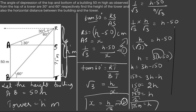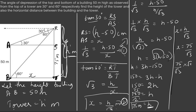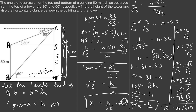We still need to find the horizontal distance x between the building and the tower. Substituting h = 75 into equation 2: x = 75/√3. Rationalizing by multiplying numerator and denominator by √3: x = 75√3/3 = 25√3 meters. So x = 25√3 meters is the distance between the tower and the building.